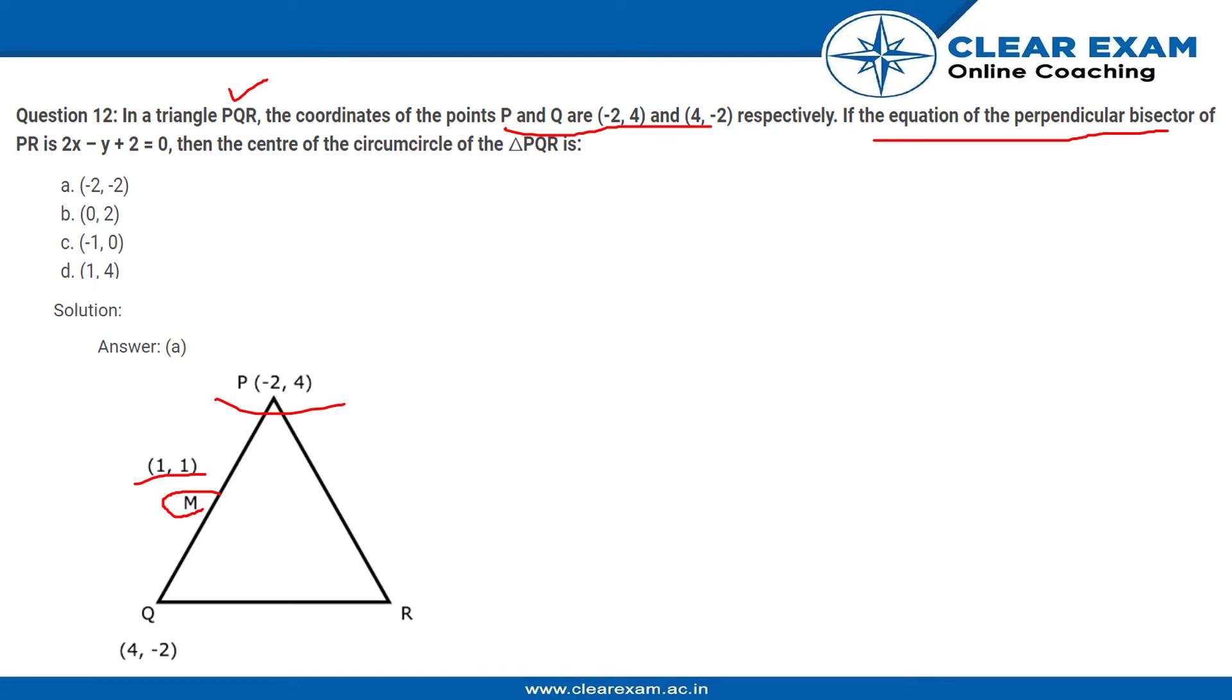And we are told that we have the equation of the perpendicular bisector of PR. Now perpendicular bisector meaning the midpoint of P and R lies on this line equation.